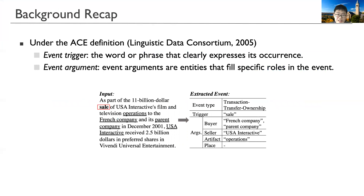Let's go through some background recap. Under the ACE definition, an event consists of a trigger and its corresponding argument spans. In the following example, the goal is to extract the word 'sale', which triggers the transaction event, and its corresponding arguments.